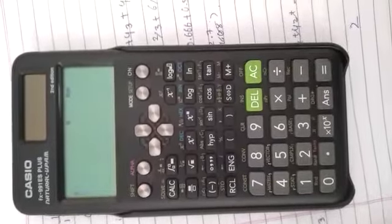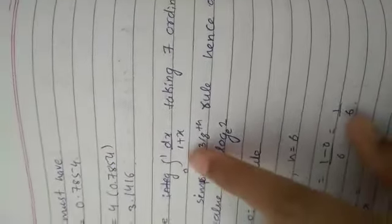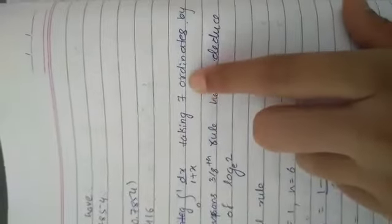A table for trapezoid rule. First, we are considering a question: integration from 0 to 1 of dx divided by 1 plus x. There are 7 ordinates, with a equals 0, b equals 1, and n equals 6.